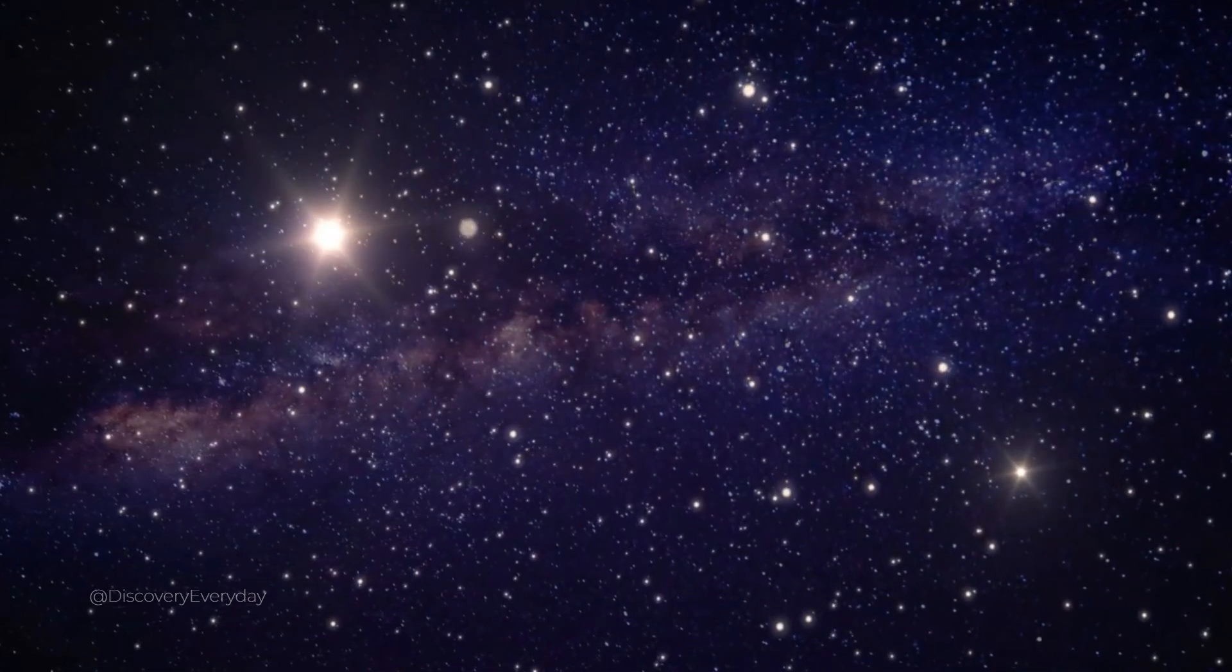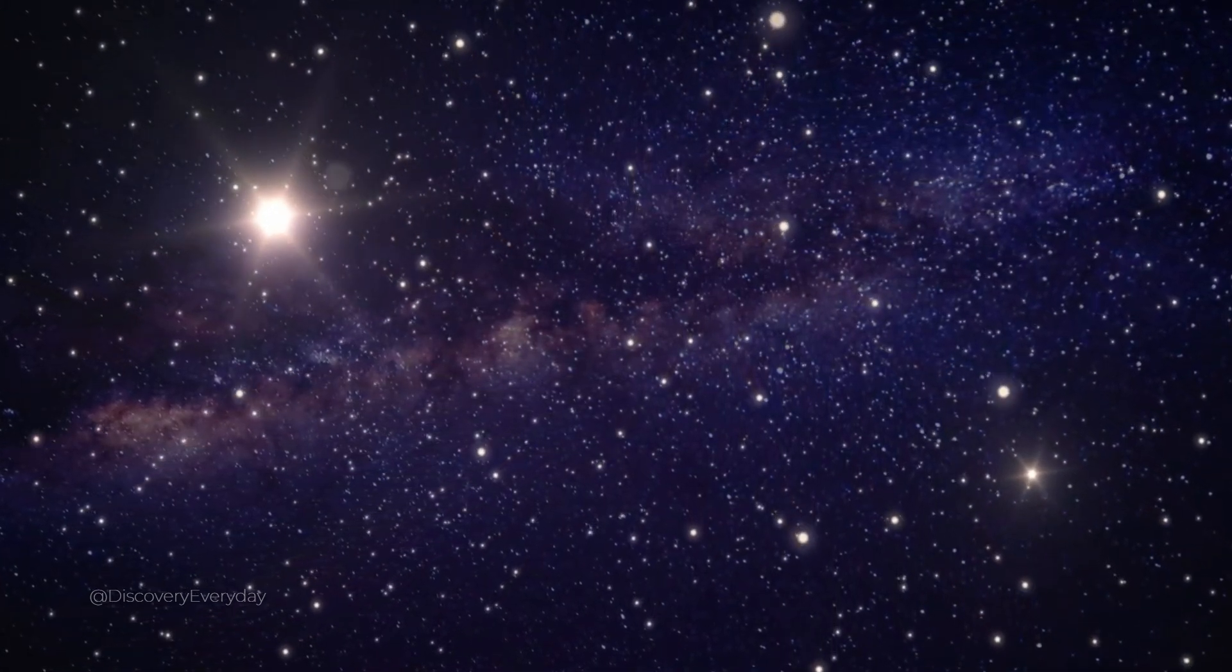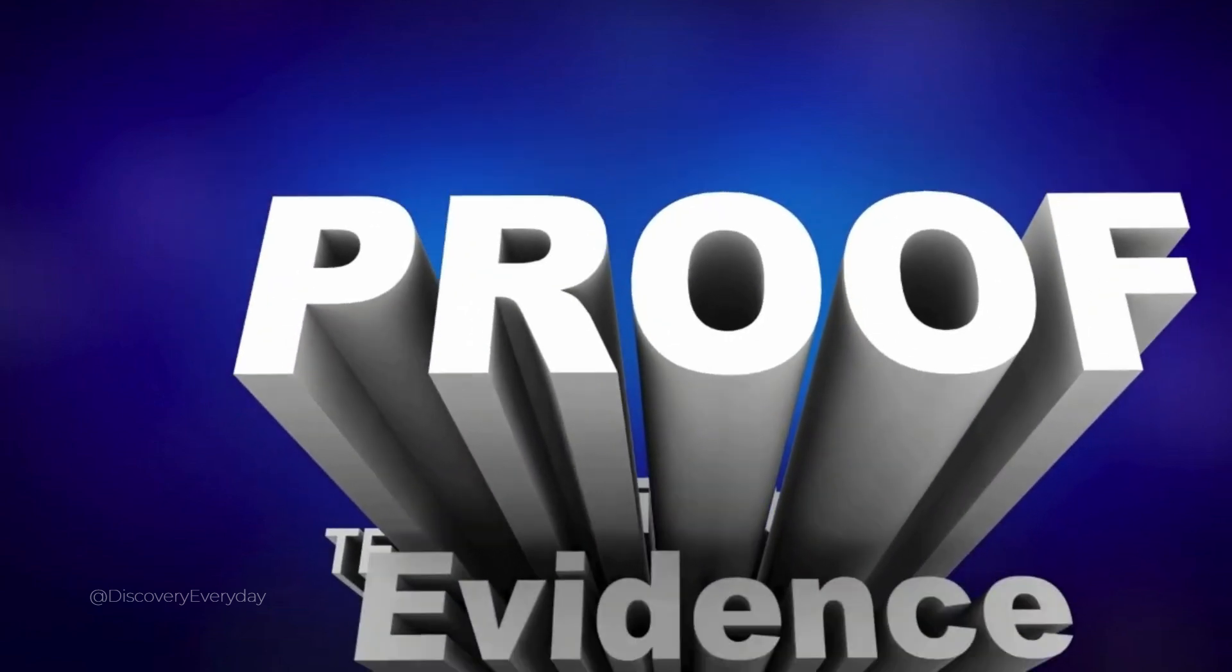When Albert Einstein built his famous equation E equals mc squared, he showed that matter and energy are basically the same things. So if energy and mass are tied to each other, where did it all come from? The answer is that we made it all up from an event called the Big Bang.